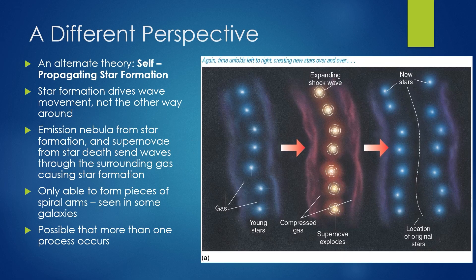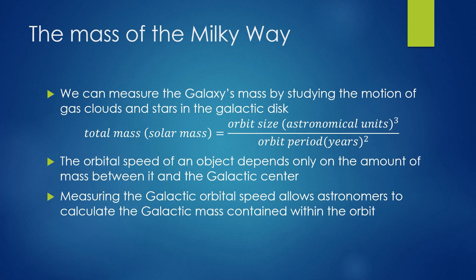An alternative theory is that star formation drives wave movement, not the other way around. The emission nebulae created when these stars form and the supernovae when they die send shock waves through the surrounding gas, possibly triggering new star formation. Computer simulations suggest it is possible for this theory to create spiral arms, but only pieces or fragments — not the galaxy-wide spiral arms that we have seen. It is possible then that there is more than one process at work — maybe there is a wave that starts things happening, and then from stars forming and dying and giving off supernovae, more stars start to form creating these fragments of arms.